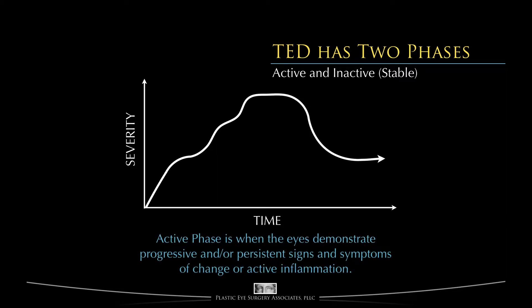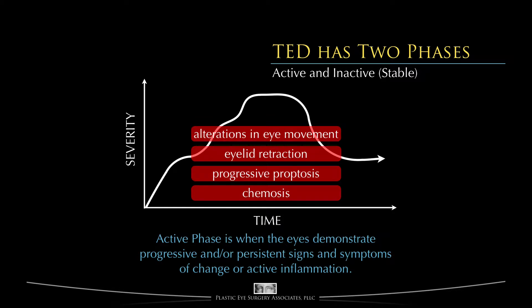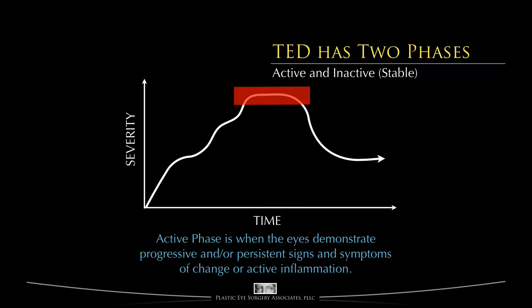We see that there is an active phase of thyroid eye disease in which the eyes demonstrate progressive and/or persistent signs and symptoms of change or active inflammation. There may be continued chemosis, progressive proptosis, changing eyelid retraction, or alterations in the amount of eye movement disorder and associated double vision. For some period of time, these signs and symptoms all worsen, and then they stop changing for a while and more or less plateau. After some time, there is often a degree of improvement in the eye findings as residual swelling slowly slips away, and then a final state of stability — another plateau. Notice that the second plateau never reaches the baseline from which the person started, so a person is typically left with residual changes. Their eyes may be more affected than before the disease started, but not as bad as they were at the peak of the disease.